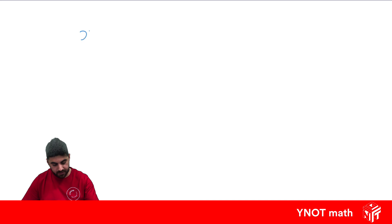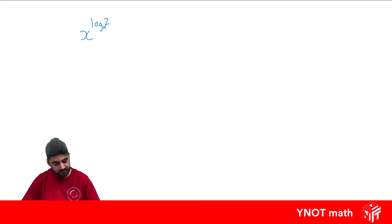What about x to the power of log 2 base x? When we have a base raised to the power of a log with the same base, you can imagine the log and the base cancelling out, leaving us with 2.